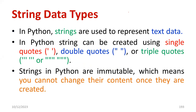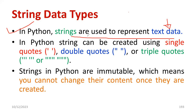Moving further, what do you mean by string data type? In Python, strings are used to represent text data. That is why we use string data type. For representing integers, you use integer data type. String is another type of data type used to represent text data.